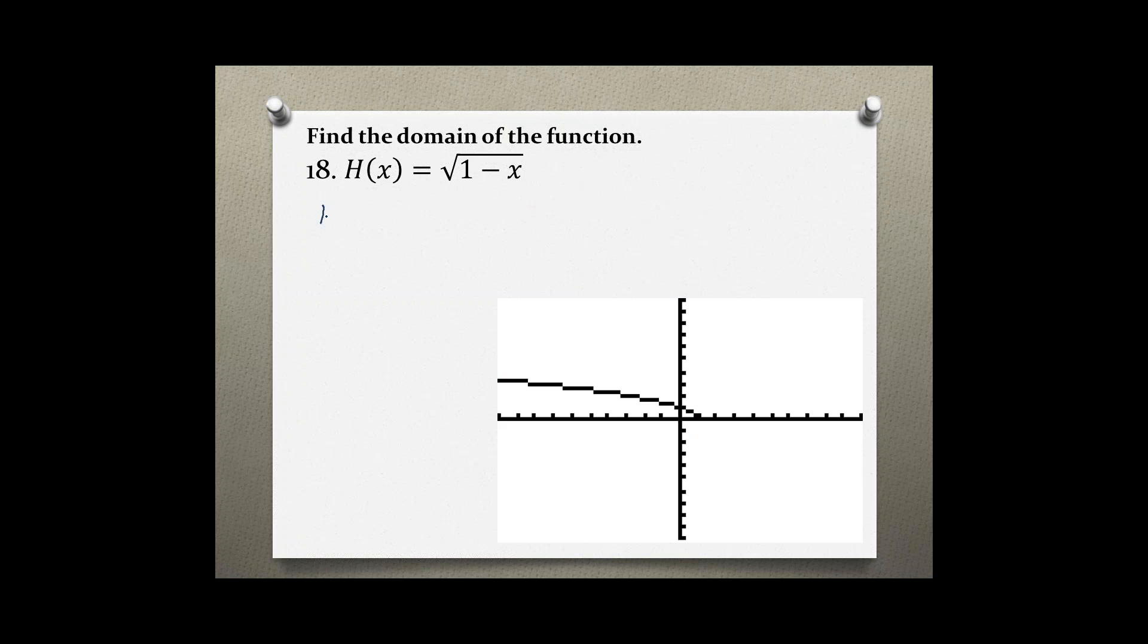1 minus x is greater than or equal to zero. Let's solve for x by subtracting 1 from both sides, which leaves us with negative x is greater than or equal to negative 1. Now let's divide by negative 1 on both sides to get rid of the negative sign in front of the x.